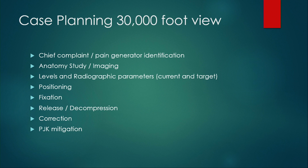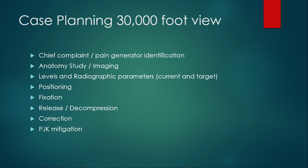By way of a 30,000 foot view for case planning, the most important thing is the chief complaint — why is the patient coming to you for help? What are their pain generators? Can we identify them and match them to their anatomic lesions on imaging? We figure out the levels to treat, the region of the spine with the deformity, the radiographic parameters — current and target. We position the patient appropriately, get fixation, perform release and decompression, and then correction. Critically, PJK is still an unresolved issue in adult deformity and should be planned into your approach.